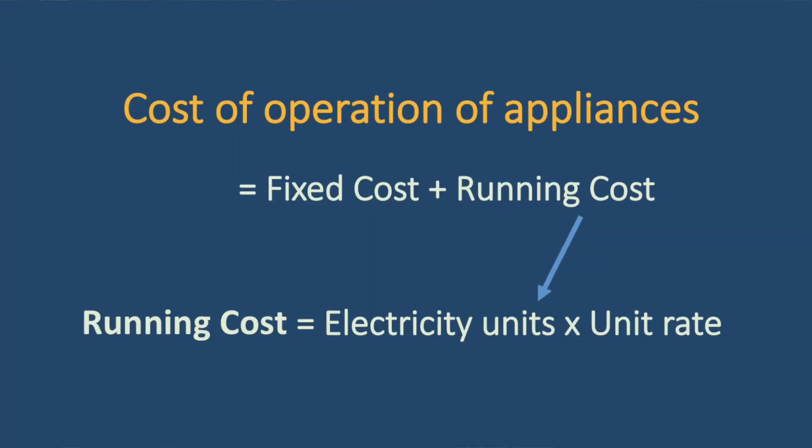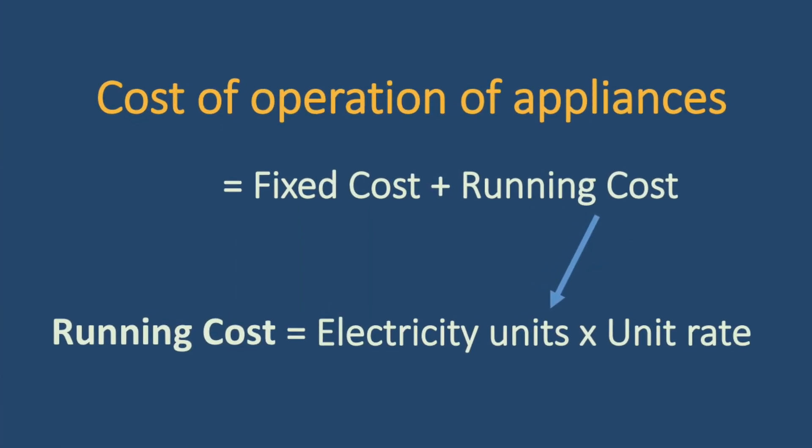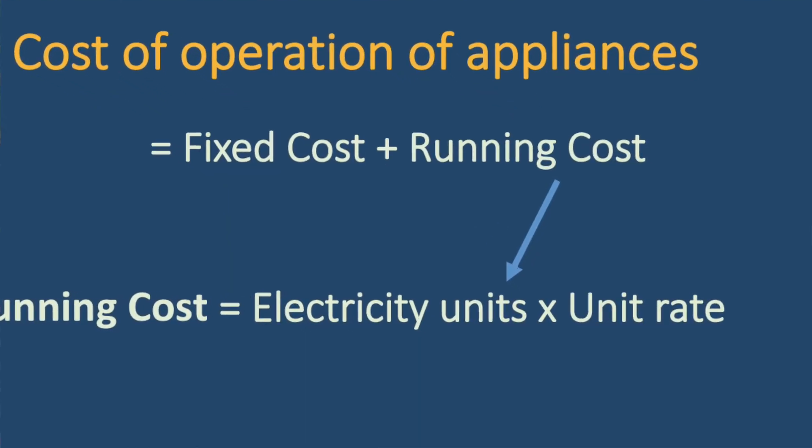There are two components in the cost of operation: one is called the fixed cost and the other is the running cost. Fixed cost is the cost you pay while buying an appliance — for example, whatever cost you pay when buying an air conditioner is your fixed cost. Your running cost depends on how many hours you are going to use it and how much energy the appliance is consuming. Energy consumption is of course determined by efficiency, and there is another parameter: the rate of electricity.